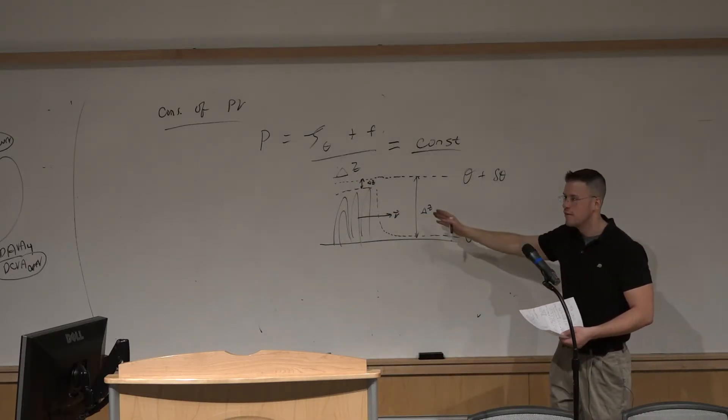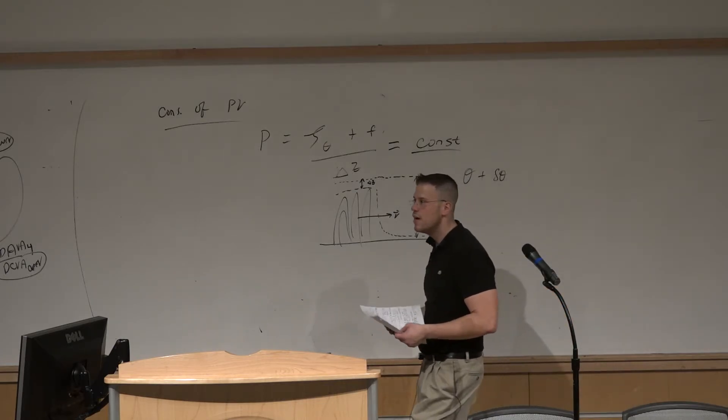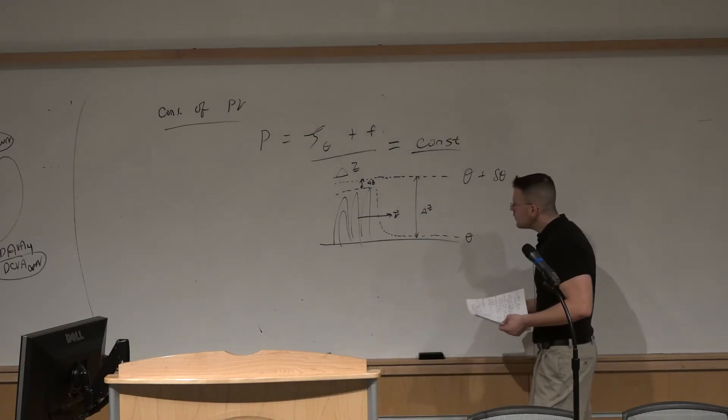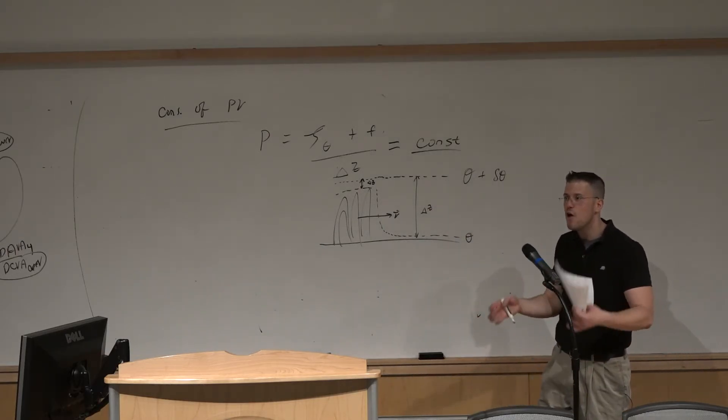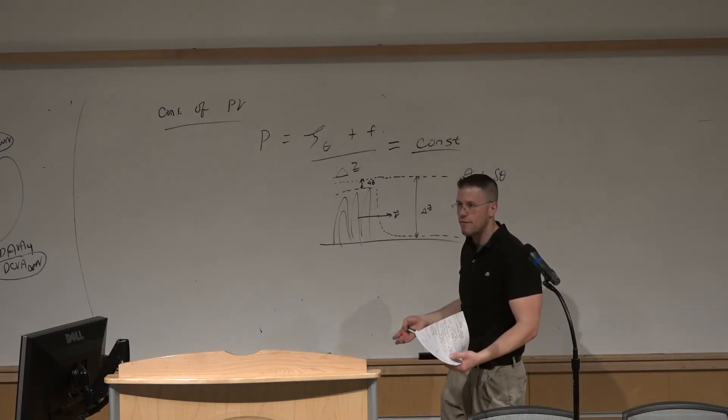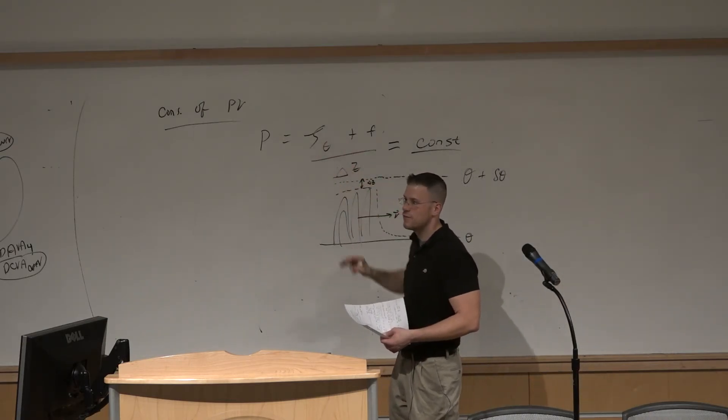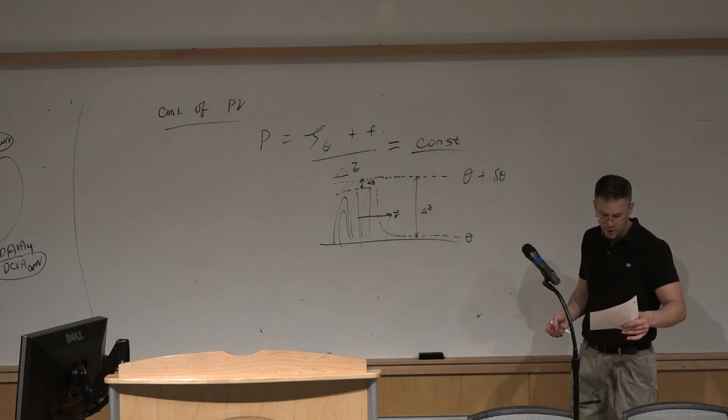At the same time we have downslope flow, we have adiabatic warming associated with subsidence. That warming process is going to be associated with a decrease in density down low, decrease in pressure, kind of the thermal heat trough concept come about, and we get lee troughing take place. And that is going to be aligned with a source of low-level spin about a vertical axis that is cyclonic. That's what we call the lee trough.